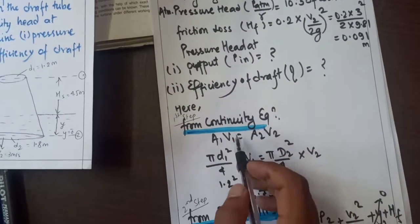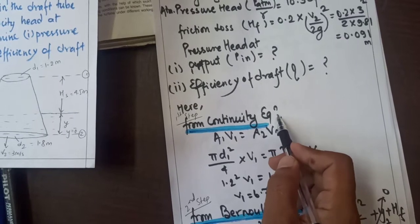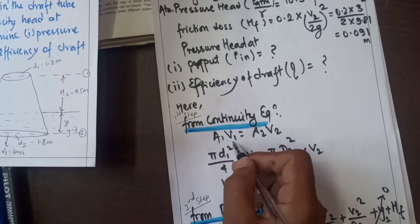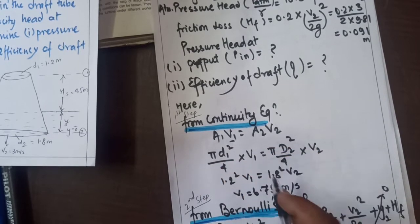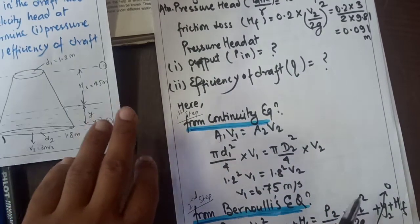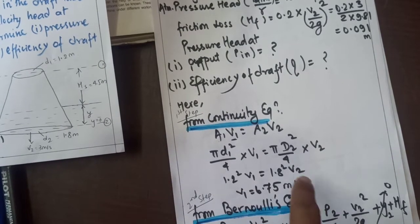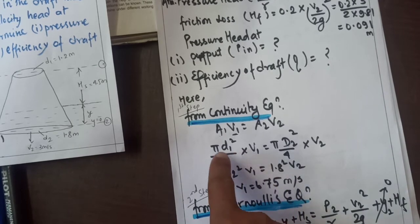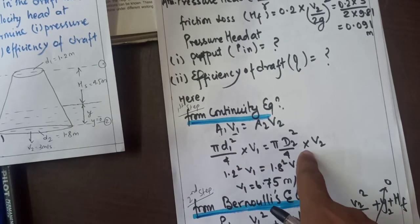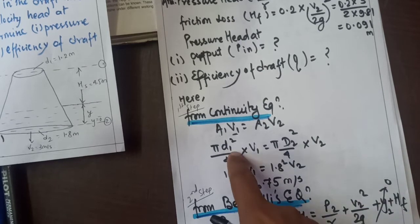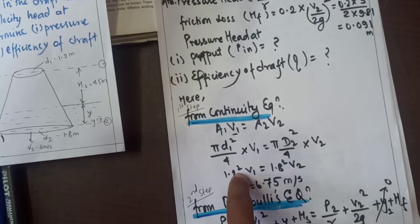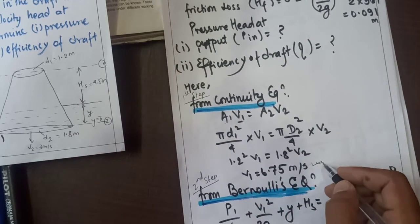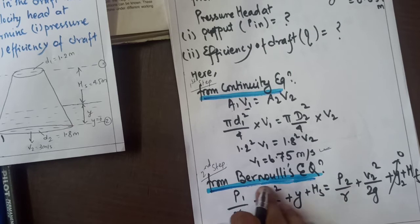First step, I will apply continuity equation. A1V1 equals A2V2. By continuity equation, pi by 4 times D1 square times V1 equals pi by 4 times D2 square times V2. Canceling pi by 4, 1.2 square V1 equals 1.8 square times 3. We can find the value of V1.